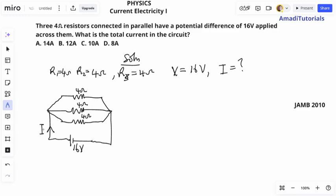So how do we get this total current? From Ohm's law, V equals I times R, where I represents the total current and R represents the equivalent resistance. V represents the total voltage, which is 16. So I will be V divided by equivalent resistance.